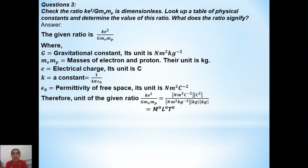Therefore, since all the dimensions cancel and we get zero for every dimension — mass, length, and time — we verify that the given ratio is indeed a dimensionless quantity. This answers the first part of the question.